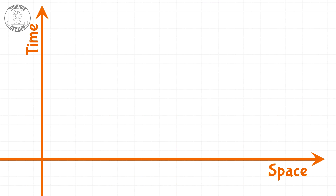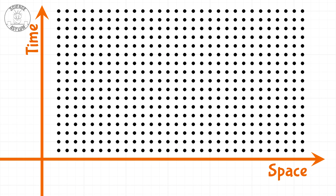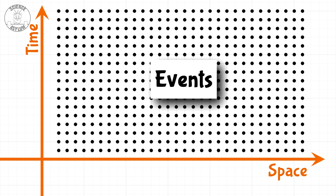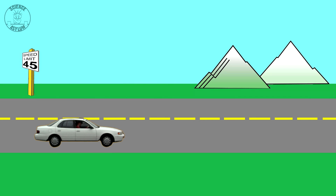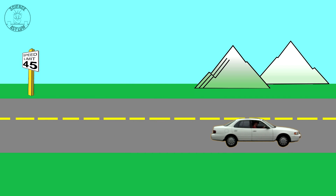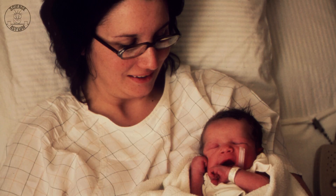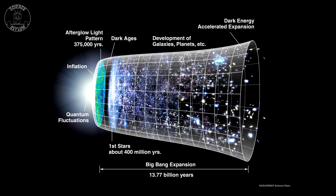Let's start with some basics. Space-time is a giant collection of points called events. Those events can be anything: the moment a car begins to move, the moment it stops, that time you woke up in bed this morning, your birth, the big bang, or you clicking this video.